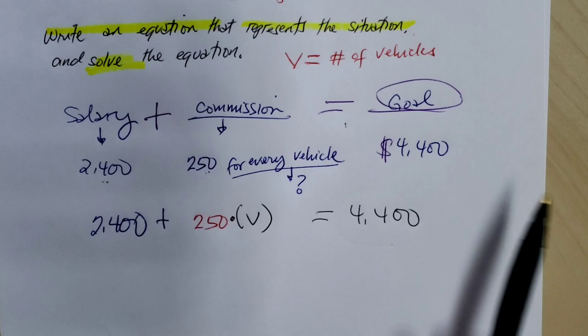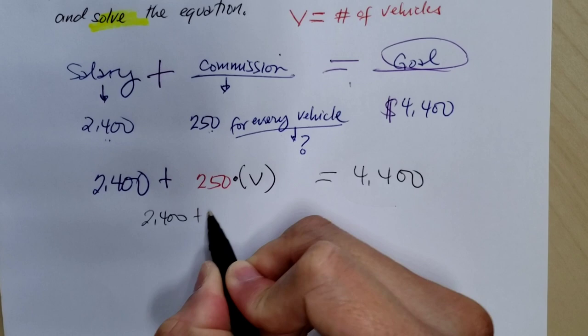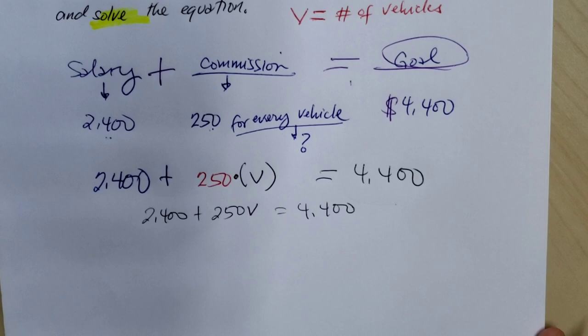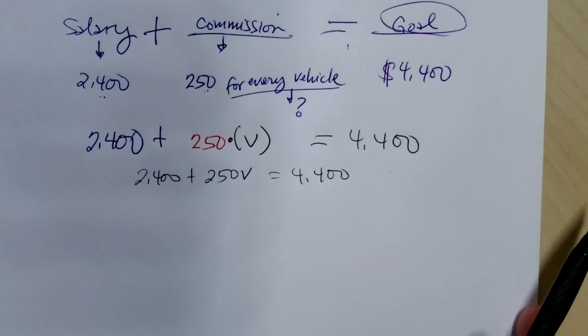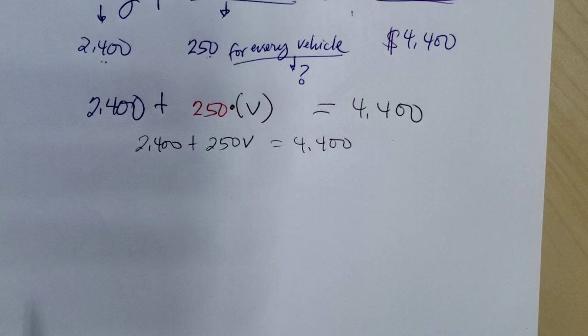Now let's solve this. To simplify this: 2,400 + 250v = 4,400. Remember our two-step equation. Step one is to simplify, and we just did. Step two is to either add or subtract.